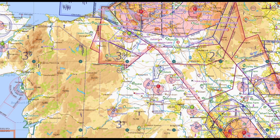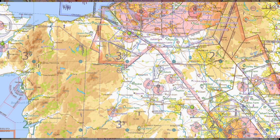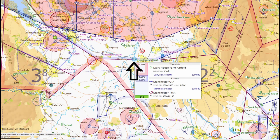On today's flight what I need to do is find a grass farm strip to fly into. Now if we look at the SkyDemon map, these typically tend to be the green airfields marked on here. And if we look about 20 miles to the north-northeast of Sleap, we find Dairy House Farm. I've never flown into here before, but we can use SkyDemon to obtain some more information to make sure it's safe to conduct the flight.